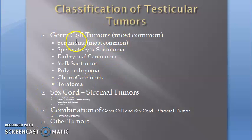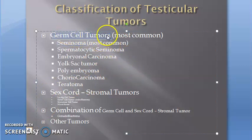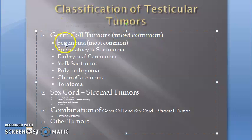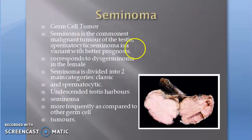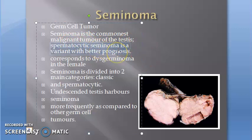In this video we want to cover seminoma — the most common type of germ cell tumor. Germ cell tumors themselves are the most common types of testicular tumors. In seminoma, you have two types: the classic seminoma and the spermatocytic seminoma. The classic seminoma is the most common and can simply be called seminoma. It is a germ cell tumor and the commonest malignant tumor of the testis, with spermatocytic seminoma being a variant.